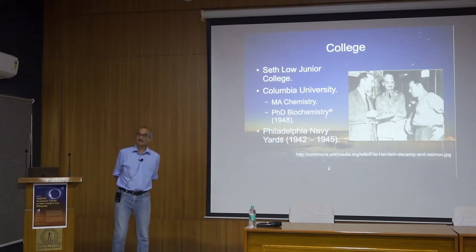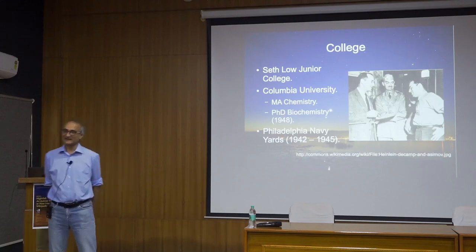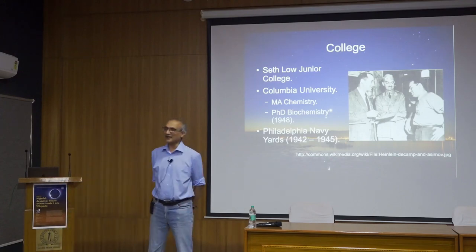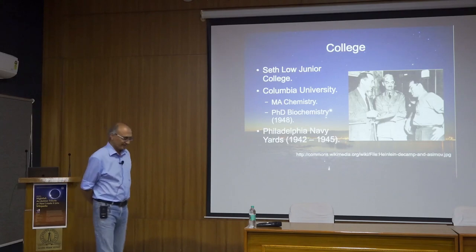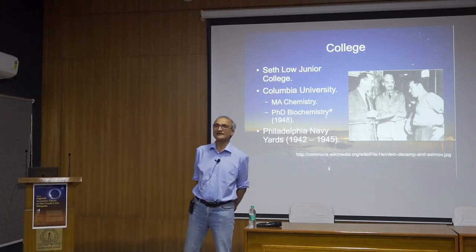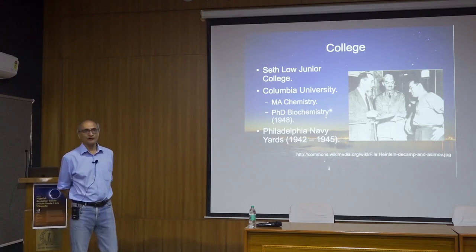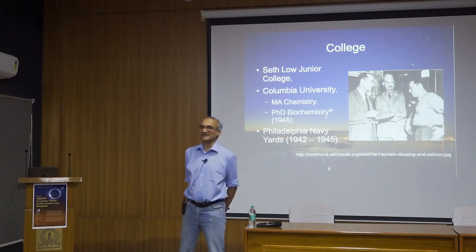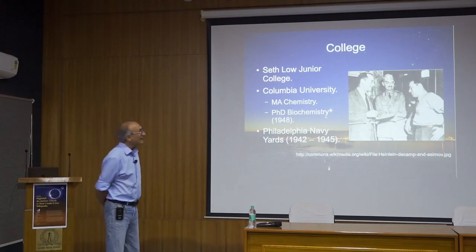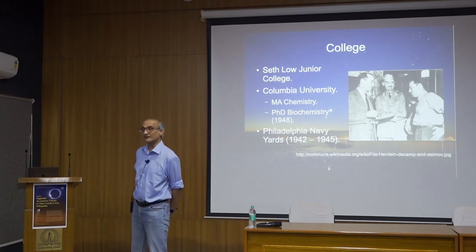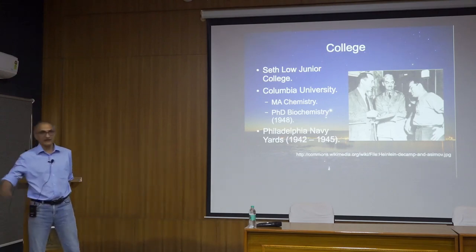L. Sprague de Camp came out of the military with a profound disrespect for bureaucracy. Eric Frank Russell is another — in his story, the official dog is missing from the spaceship, but because it's listed as 'offog' in the manifest, they spend all their time trying to put together an 'offog,' not realizing it means 'official dog.' These people came out with a profound disrespect for bureaucracy. Asimov himself came out as a confirmed pacifist.